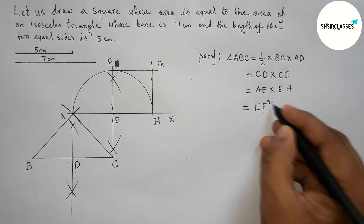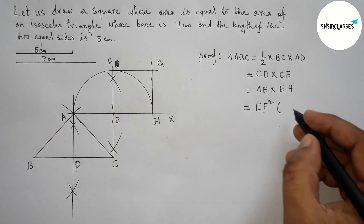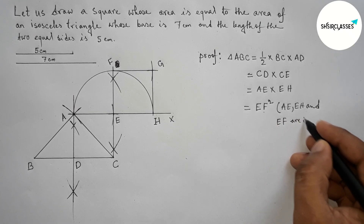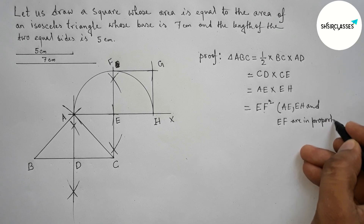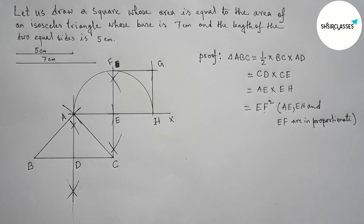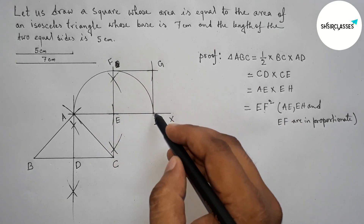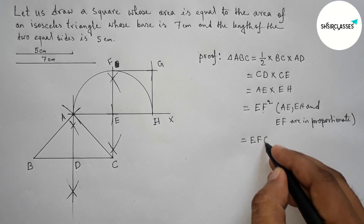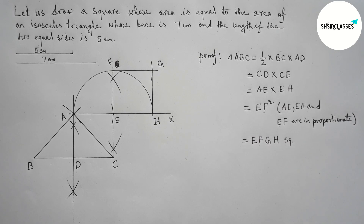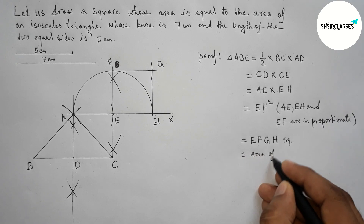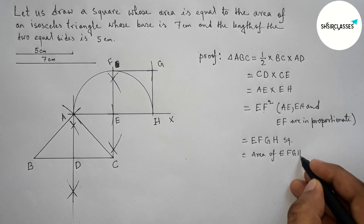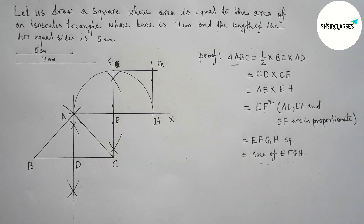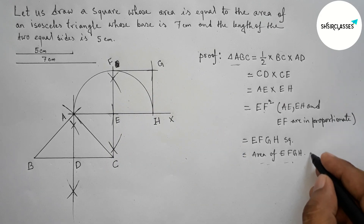Since AE, EI, and EF are in proportion, by the proportional formula we can write EF² equals AE times EH. This EF is the side of square EFGH, so EF² equals the area of square EFGH. Therefore, area of triangle ABC equals area of square EFGH. That's the proof.